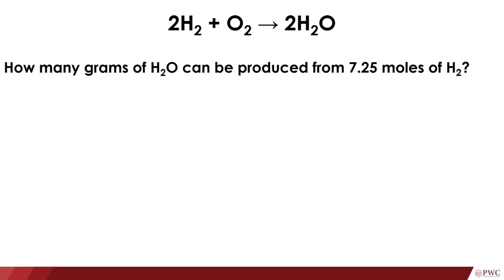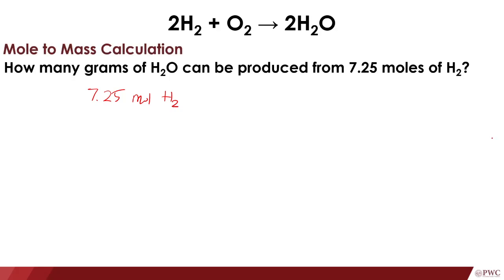Next, we have this one: how many grams of H₂O can be produced from 7.25 moles of H₂? The given here is the number of moles of one substance, and we're going to determine the mass of another substance from the same reaction. The given is 7.25 moles of H₂. By the way, this one is a mole-to-mass calculation — the given is the number of moles and we're going to determine the mass.